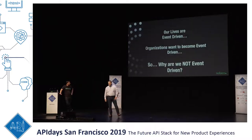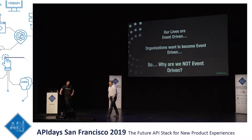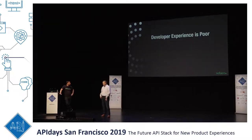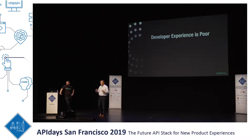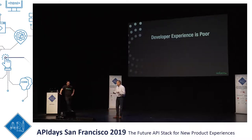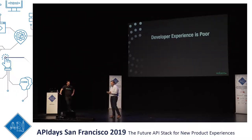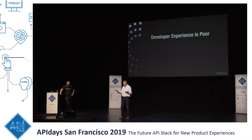Our lives are event-driven and organizations want to be event-driven — but why aren't we all there yet? From my perspective, having built an event-driven architecture for the FAA, the developer experience is really poor. Organizations that have been very successful with event-driven have had to invest a lot of resources, time, and effort to develop in-house expertise. AMQP APIs, MQTT, Paho — these aren't as easy to use as REST APIs, so you really have to want to be event-driven, and that's sad.